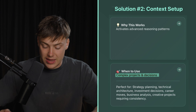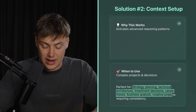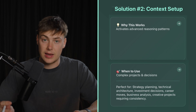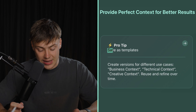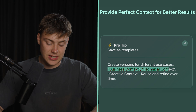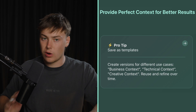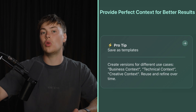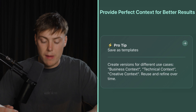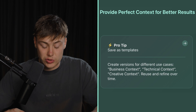This works because it circumvents the efficiency side of GPT5 to activate advanced reasoning patterns. If you have complex projects and decisions to make — strategy planning, technical architecture, investment decisions, career moves, business analysis — this is the way to structure your prompts. A pro tip: you can actually save these as templates, creating different versions for different use cases: business context, technical context, creative context. Save them in Notion, Notes, or Google Docs so when you have new questions, you just fill out the templates instead of starting from scratch.